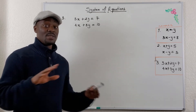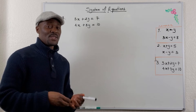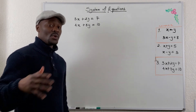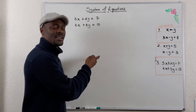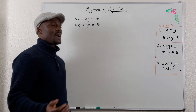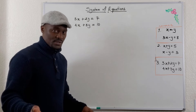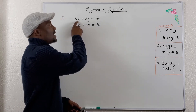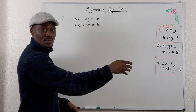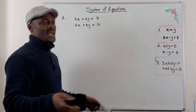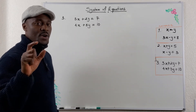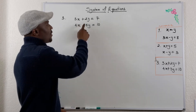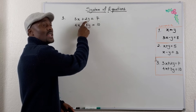Which variable should we isolate so we can substitute? You can choose anything, but my recommendation is to look at which variable you're expected to get first. Sometimes it's a multiple choice question and you can tell that if you only know what x is, you can easily guess the answer. Whichever you're trying to solve for first is what should be in your substitution. If there's no clear choice, just pick anything that looks easy — I always pick the coefficient with the smallest magnitude.